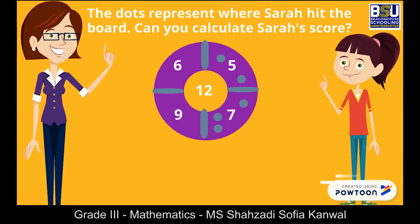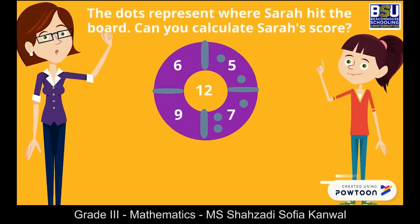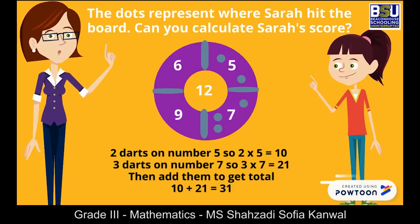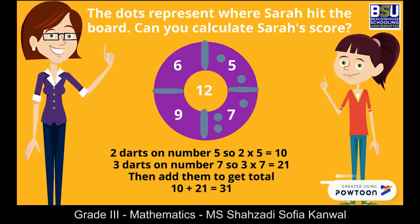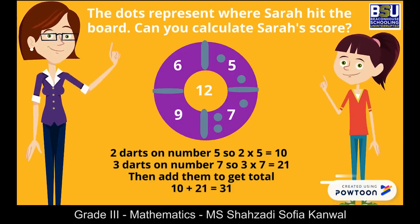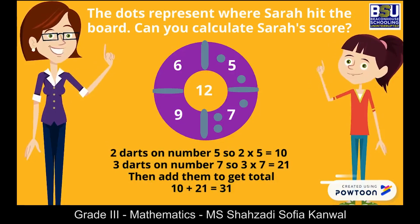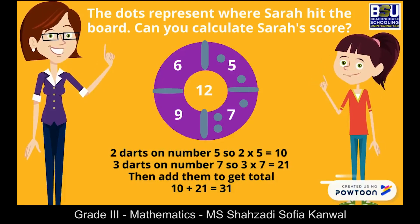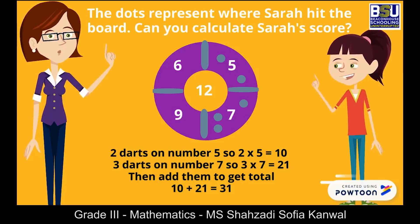Good job, students! Can you calculate Sarah's score? There are two darts on number five, so two times five equals ten. There are three darts on number seven, so three times seven equals twenty-one. By adding the two numbers we get the total score, which is thirty-one.